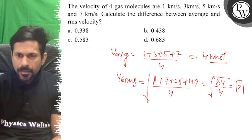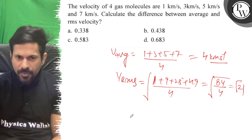It becomes approximately 4. And vrms becomes approximately 4.57.